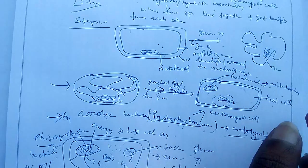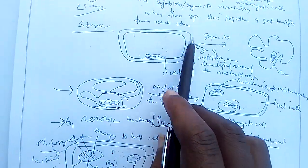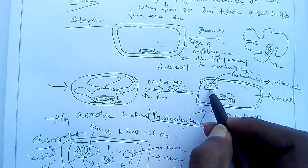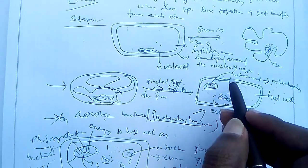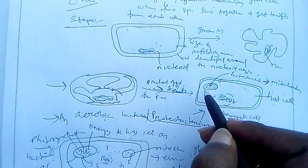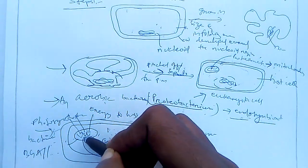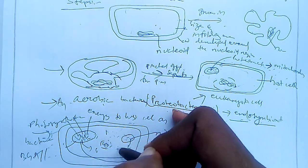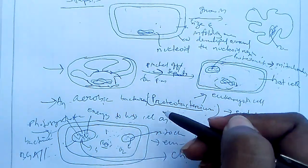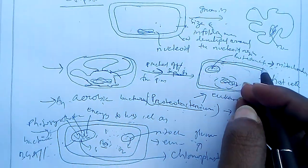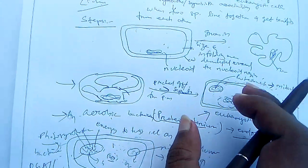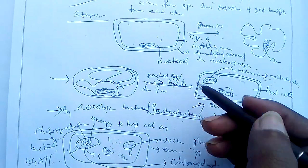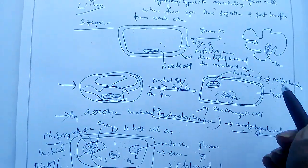This is the endosymbiotic theory explained briefly. A prokaryotic cell acts as a host cell; the cell membrane starts infolding and makes a nuclear membrane. Then a proteobacterium enters and acts as mitochondria due to aerobic respiration. Then another photosynthetic bacteria — blue-green algae — enters, capable of photosynthesis and providing glucose. Other cell organelles develop, and from a prokaryotic cell a eukaryotic cell is formed. Thank you so much.